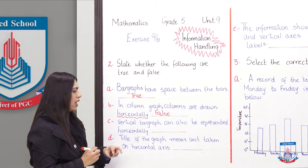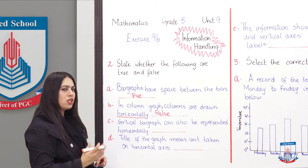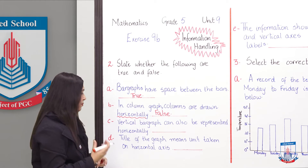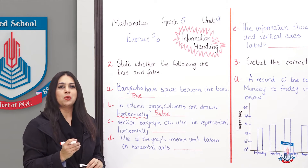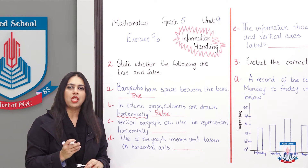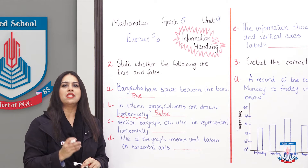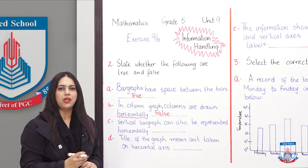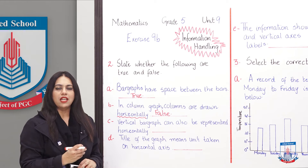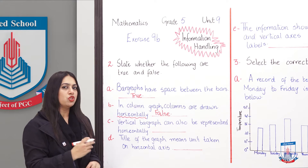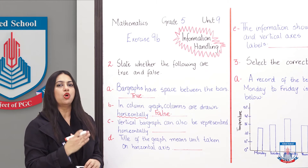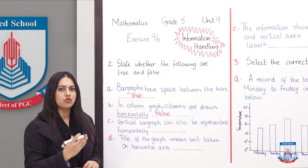Part C: 'A vertical bar graph can also be represented horizontally.' Students, if you recall, we studied this graph as well. We learned that a vertical bar graph can indeed be drawn horizontally too — which makes this a TRUE statement.